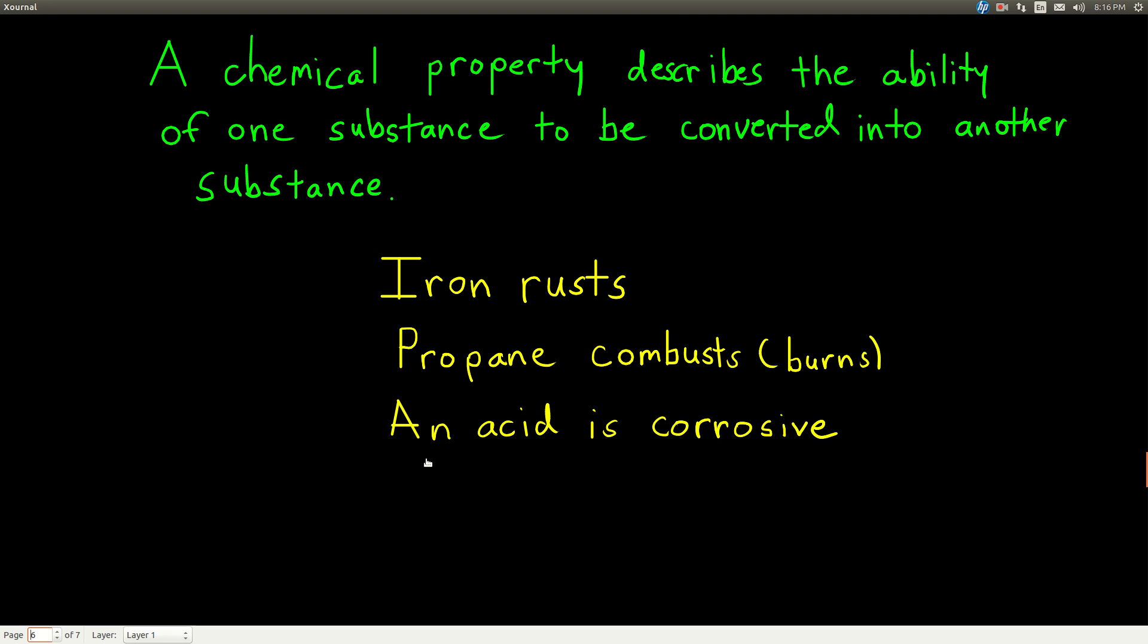For instance, iron rusts when you leave it out, and that's a chemical property. It's iron before it happens. Afterwards, rust is a different substance than iron.